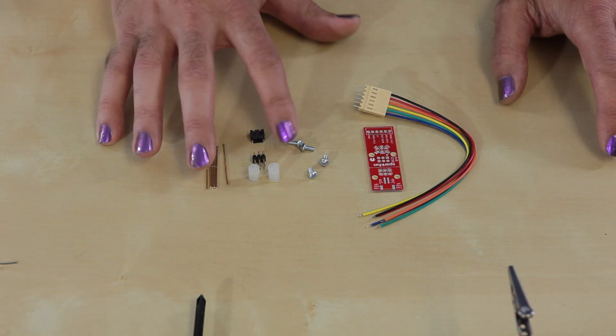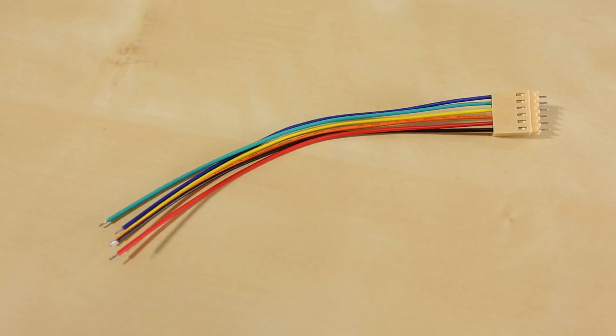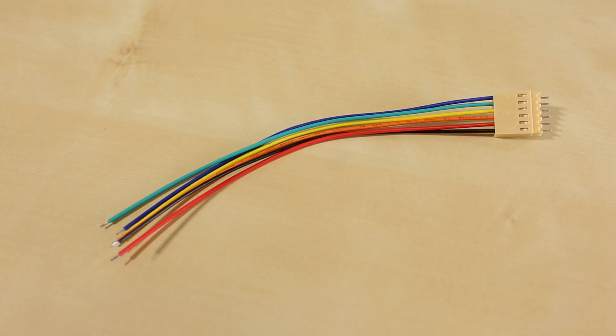A couple of plastic standoffs, some screws, the actual circuit board which is scored and we'll be breaking that in half later, and then this Molex six-pin wiring harness which will allow you to hook this up to any Arduino compatible board and use the Arduino's ISP programming sketch to turn that into an ISP programming board.